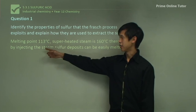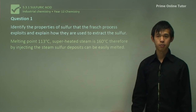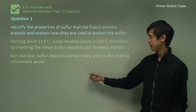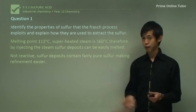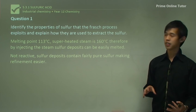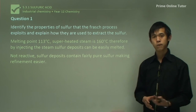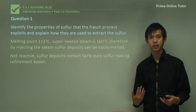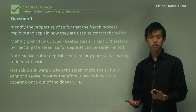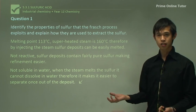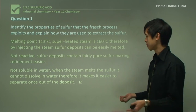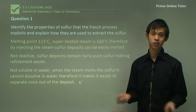The melting point of sulfur is 113 degrees Celsius — very low — so we can use superheated steam to melt it. Sulfur is also not very reactive, so deposits can be fairly pure, making refinement easier; once melted it doesn't react much with anything else. And the fact that it's not soluble in water is very useful — we can use steam to melt the sulfur, and because it doesn't dissolve, separating sulfur from the steam or water at the surface is very easy since they naturally separate themselves.